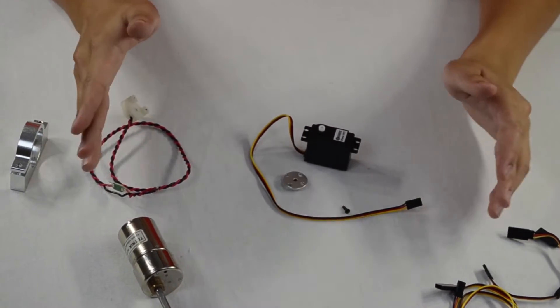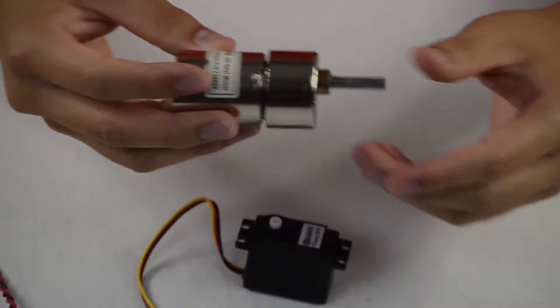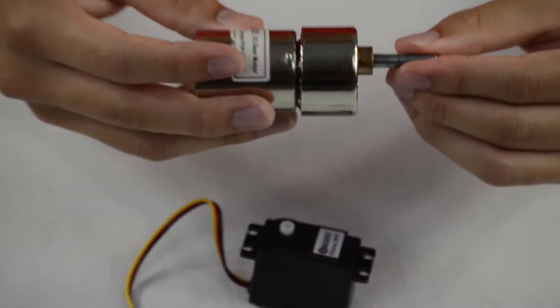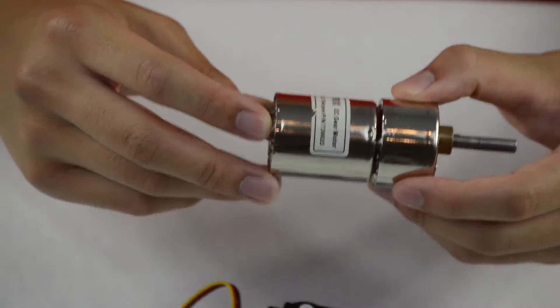Okay, so moving on to your servos and your motors. So basically, first off the motor: it's much more powerful than a servo. It can get the job done when it comes to driving wheels, driving heavy attachments or something that needs a lot of power behind it.